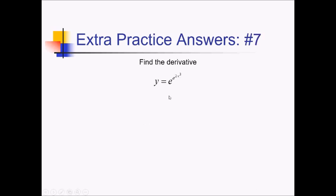For this one, I'm taking the derivative of this tower e sort of function. In order to do this, I have to start on the outside and work my way in with the chain rule. First I have the derivative of e to the something — that's e to the e to the 2x to the 3rd. But now I have to multiply by the derivative of e to the 2x to the 3rd, which is also e to the 2x to the 3rd. Next I multiply by the derivative of 2x to the 3rd, which is 6x squared.